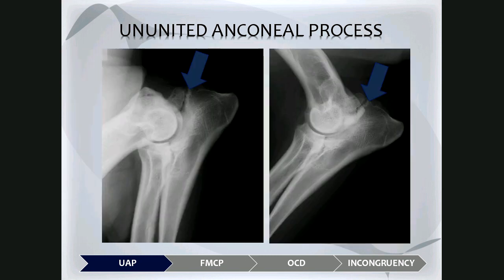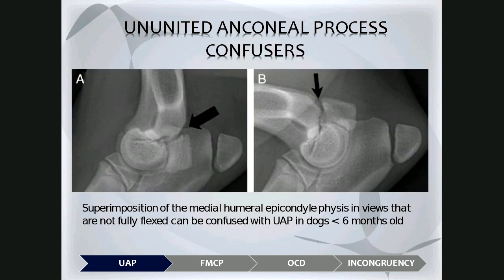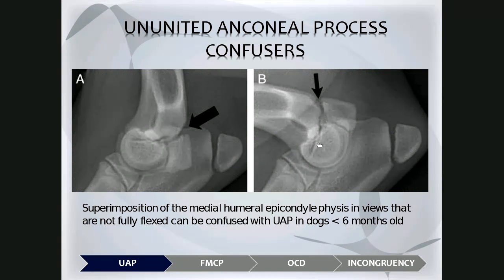Here is another example of ununited anconeal process. The more flexed image makes the vertical fissure easy to see, whereas on the neutral mediolateral, superimposition of the medial epicondylar crest over that area may confuse things. In young puppies under six months, the medial humeral epicondyle has its own physis, and that radiolucent line superimposed over the anconeus may mimic an ununited anconeal process. Taking a flexed view removes this physis from superimposing over the anconeus, confirming it is normal.